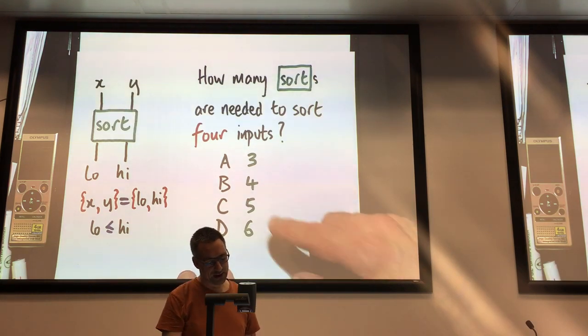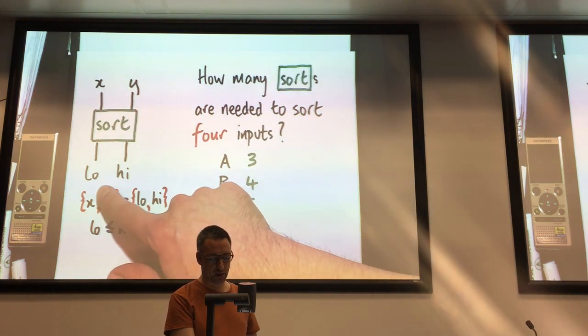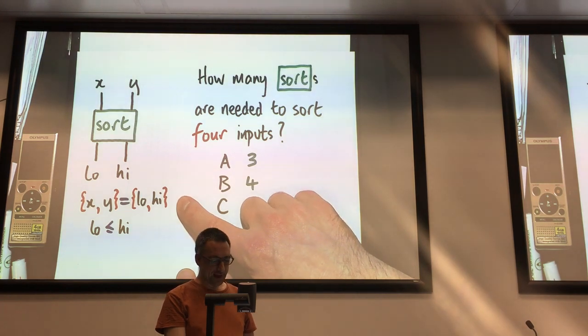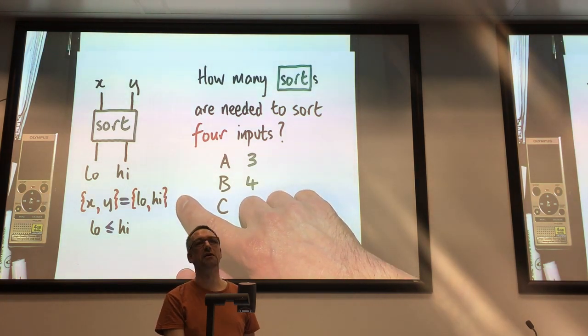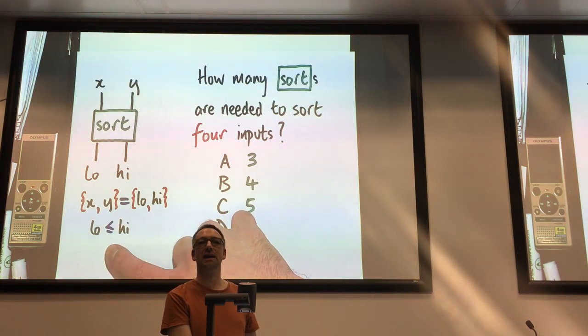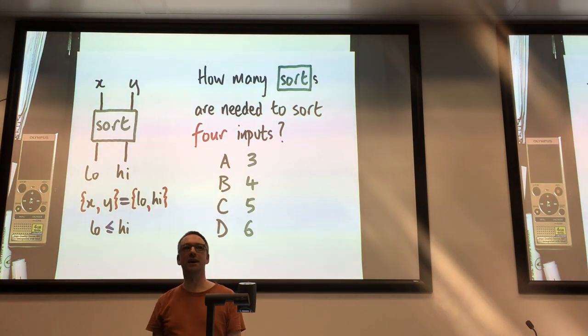So let's call the two things that come in x and y, and the two things that come out low and high. So what I'm saying in this specification is the set of things that comes out is the same as the set of things that goes in. However, low is definitely less than or equal to high. So that's to say, this box gets two inputs, if they're not already in the right order, then it swaps them.